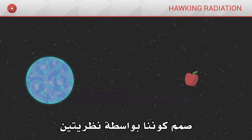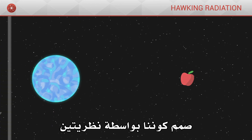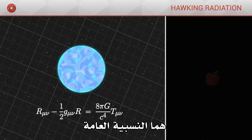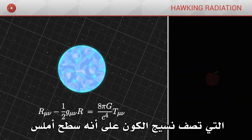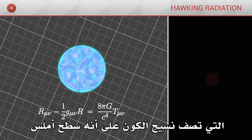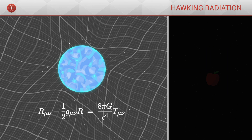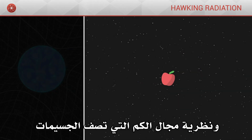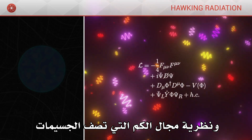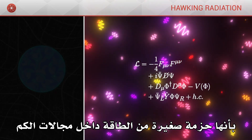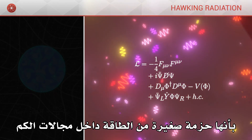Welcome back to Science Click. Today: Hawking Radiation. Our universe is modelled by two theories: general relativity, which describes the fabric of the universe as a smooth surface that can bend — space-time — and quantum field theory, which describes particles as small packets of energy inside quantum fields.